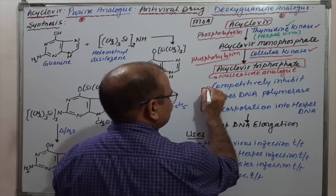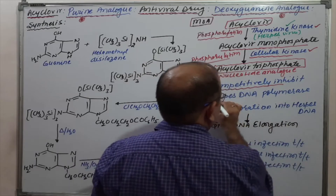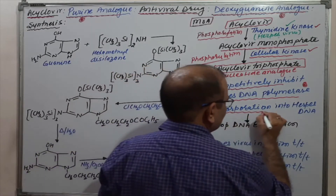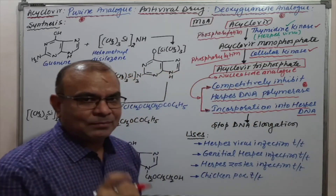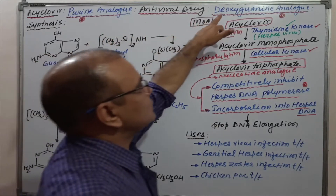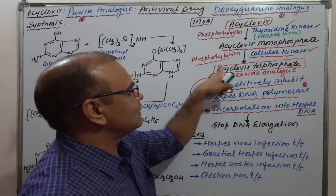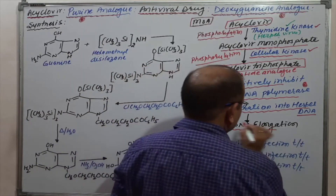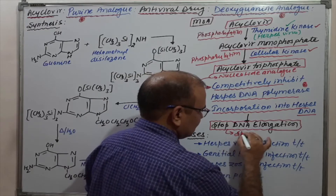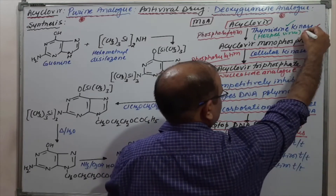The mechanism of action involves two methods: first, it competitively inhibits herpes DNA polymerase enzyme; second, it incorporates into the herpes DNA. Since acyclovir triphosphate is not a true nucleotide but a nucleotide analog — specifically a deoxyguanosine analog — its incorporation stops DNA elongation, resulting in the death or stop of growth of the herpes virus.